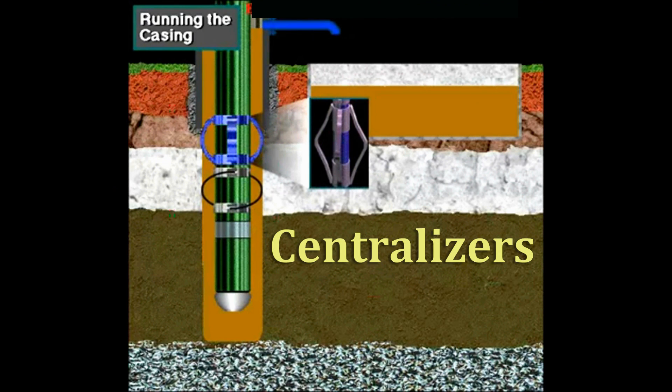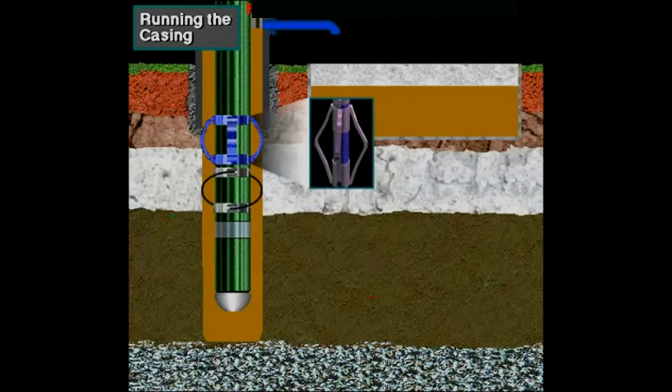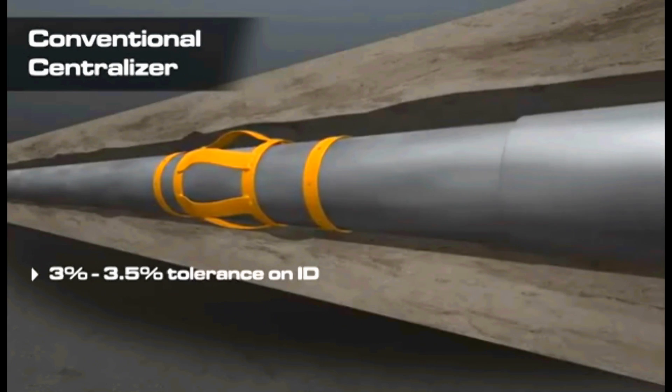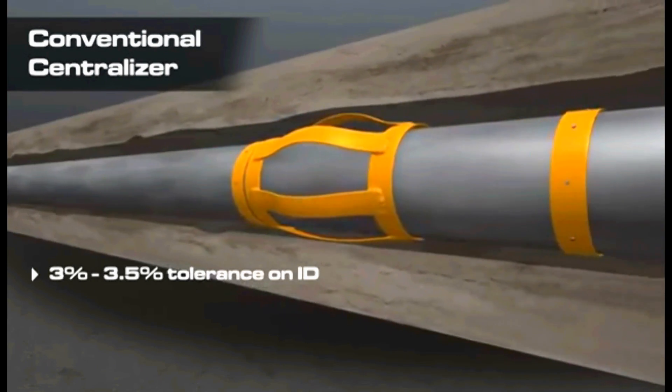Centralizers sit at the top of selected joints. They are attached to the outside of the casing pipe to center the pipe in the hole in preparation for cementing.